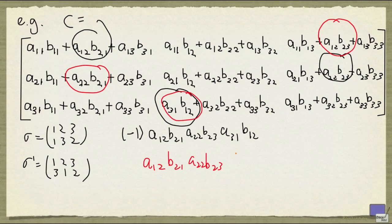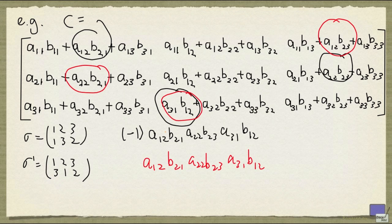Which if you multiply out, you get a12 b23, a22 b21, and a31 b12. So it's the same product except for the sign, and there are no other ways to obtain this same product. Now notice that these two terms cancel out, so they disappear. This is not a coincidence.